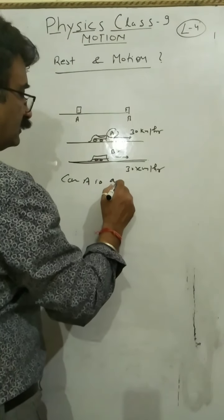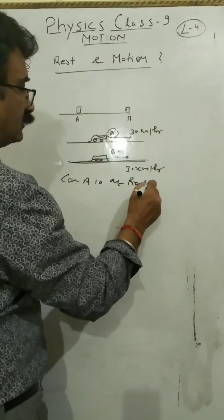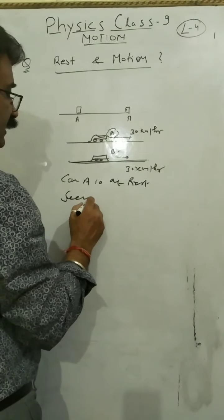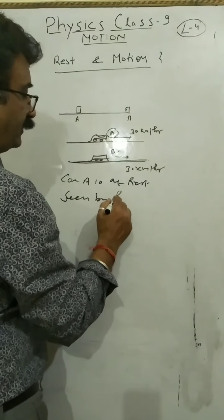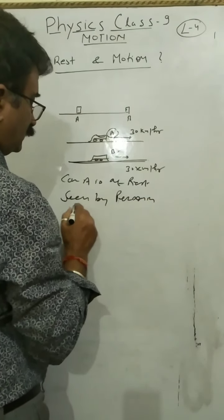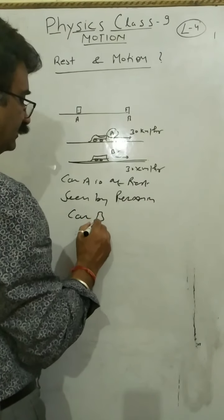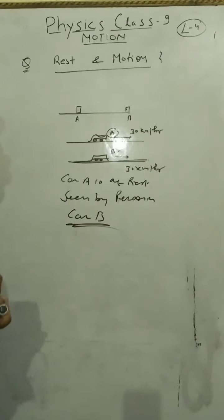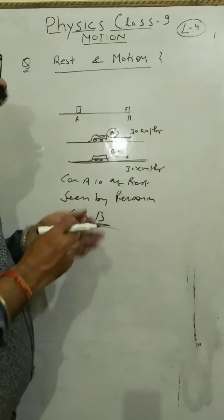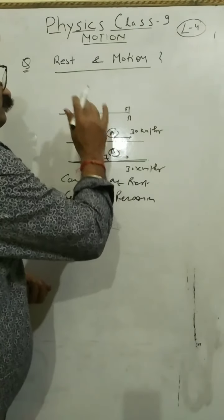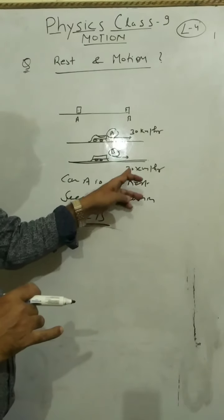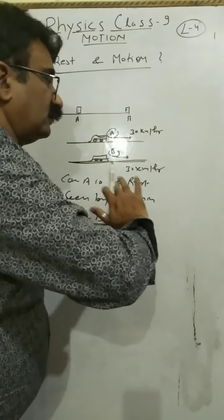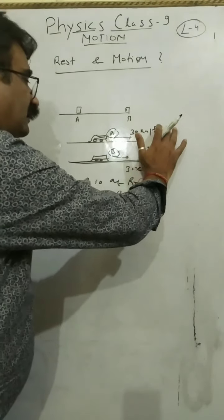The person is at rest. The person is at rest seen by person in car B. So from here, person will say that car A is at rest, although both the cars are moving towards the right with 30 km per hour.